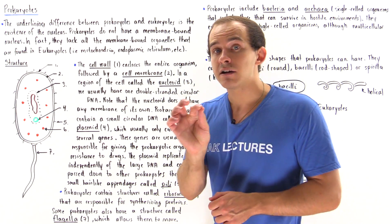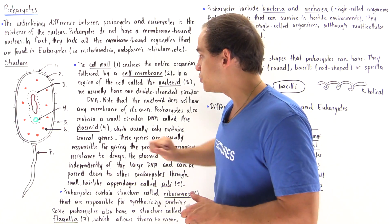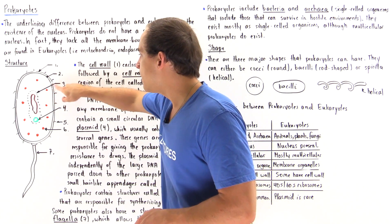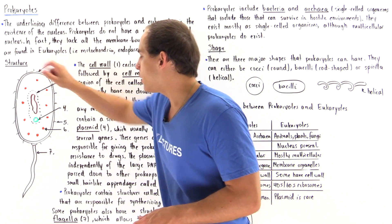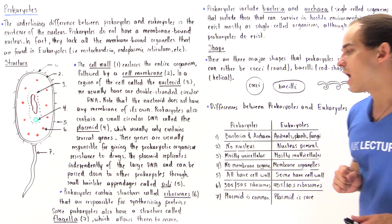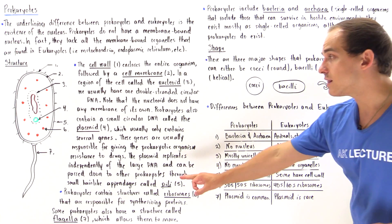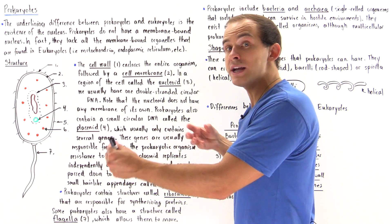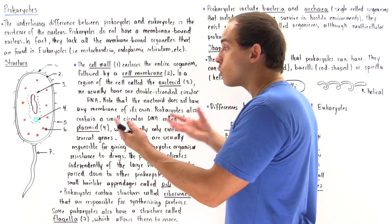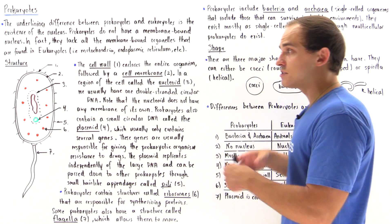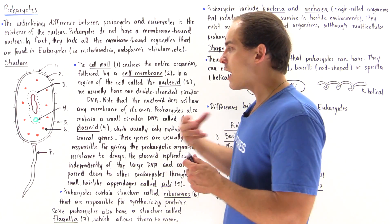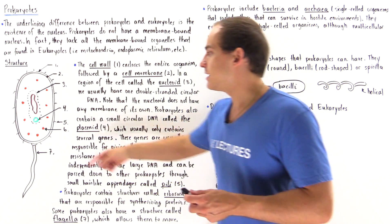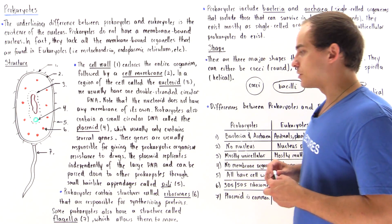We have small hair-like appendages labeled by five. These appendages, which are known as pili, are responsible for connecting and bridging two or more organisms together to basically transfer that replicated plasmid structure.